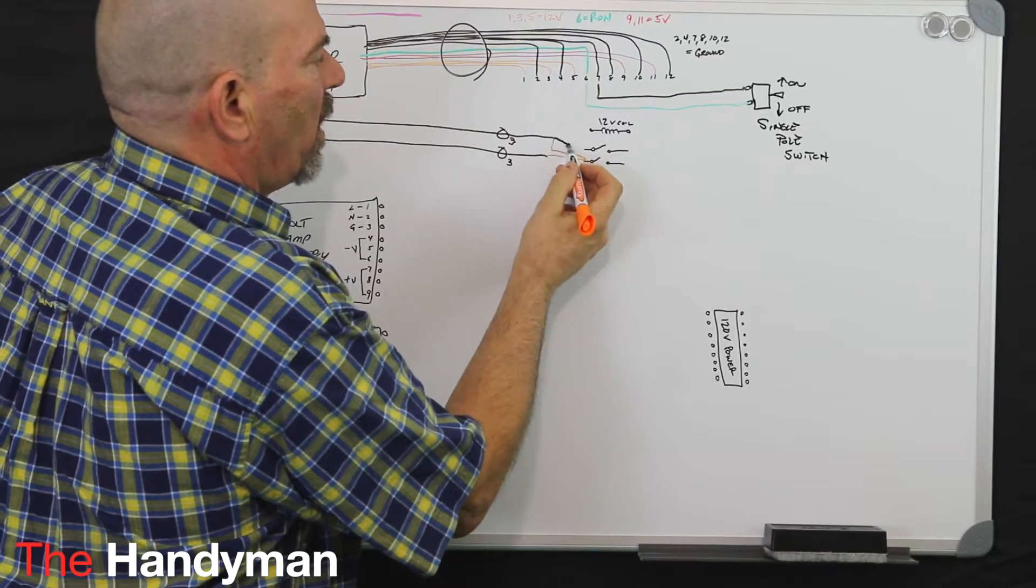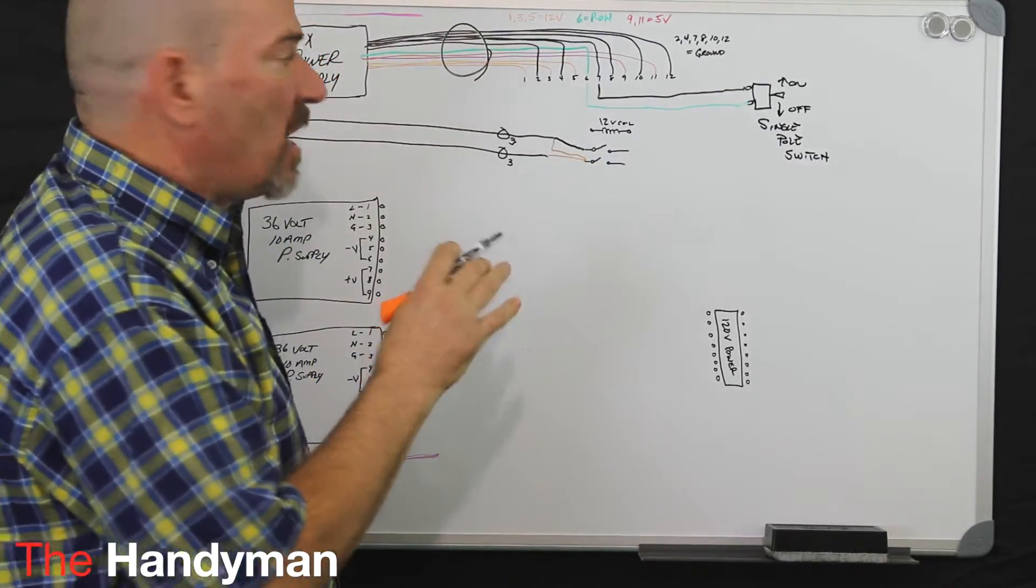Next, you're going to take your black wire out of each and you're going to run that to one side of a normally open contact.